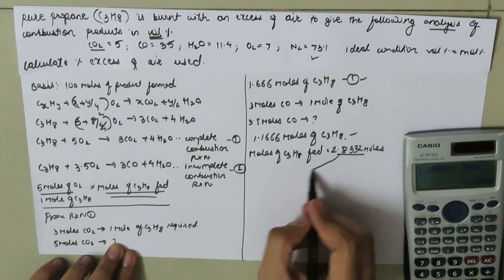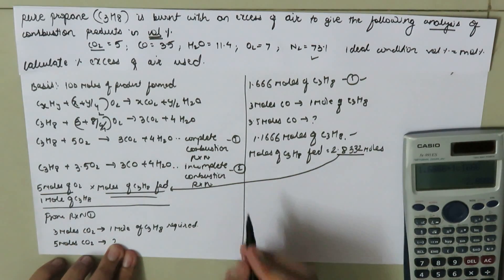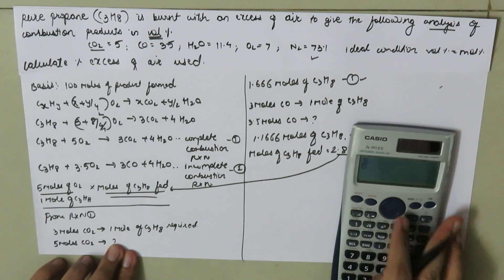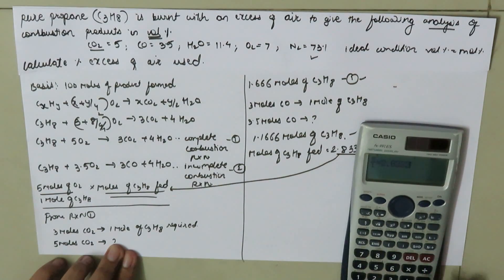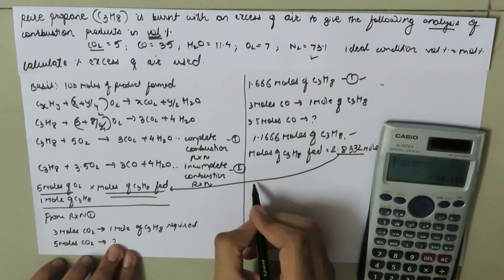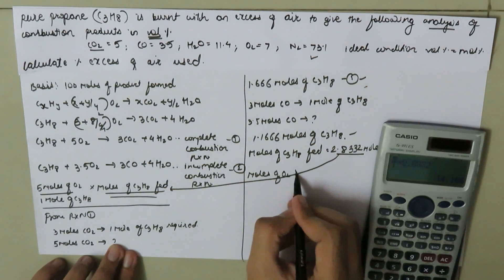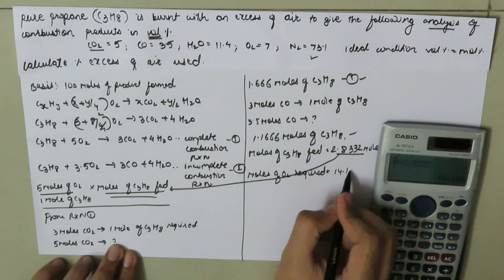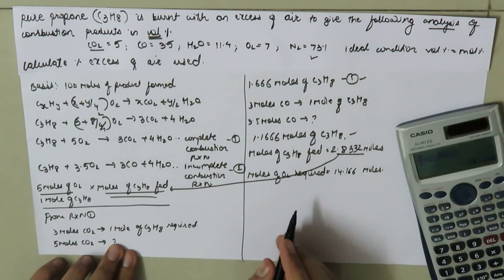Using this value, we can find the moles of oxygen required. From reaction one, 5 moles O2 per mole C3H8, so: (5/1) × 2.8332 = 14.166 moles of oxygen required.